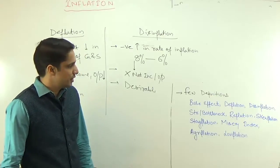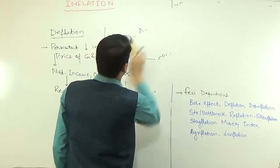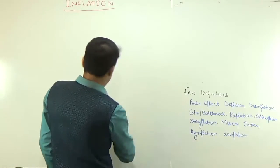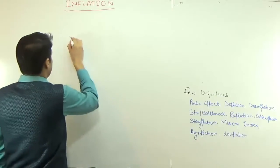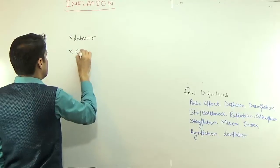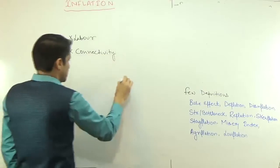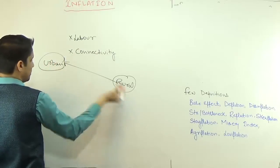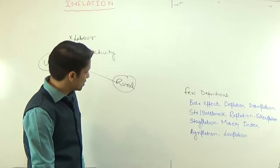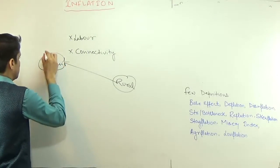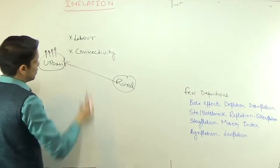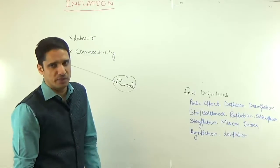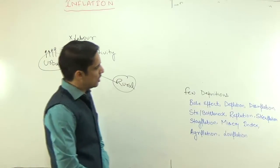Deflation is just the opposite of inflation. Then we have structural or bottleneck inflation. Structural or bottleneck inflation means there are structural or bottleneck problems in the economy — for example, no labor, or no connectivity between rural and urban areas. So whatever perishable items are grown by rural farmers cannot be sold in urban areas, demand for those items increases, and that causes inflation. Such a type of inflation is known as structural or bottleneck inflation.